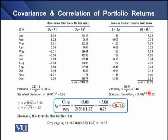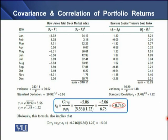These standard deviations show that the stock market is relatively riskier than the bond index market. When we use these values in the correlation model, we get a correlation of negative 0.746, confirming a negative correlation between the stock market index and the bond market index. Rearranging the model we can also derive the covariance value of minus 5.06, demonstrating that the covariance and correlation models are interchangeable given at least two known values in each model.